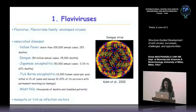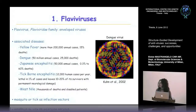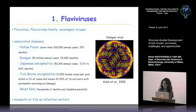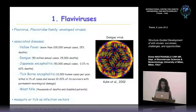Starting from Flaviviruses: they are enveloped viruses whose associated diseases are important human diseases, such as yellow fever, which causes more than 200,000 cases per year, and even with a vaccine, there are still 50% deaths. Dengue is the most diffused Flavivirus with 50 million annual cases and 25,000 deaths per year, with no vaccines and no antivirals. Japanese encephalitis causes 50,000 cases per year, with mortality from 0.3 to 60%.